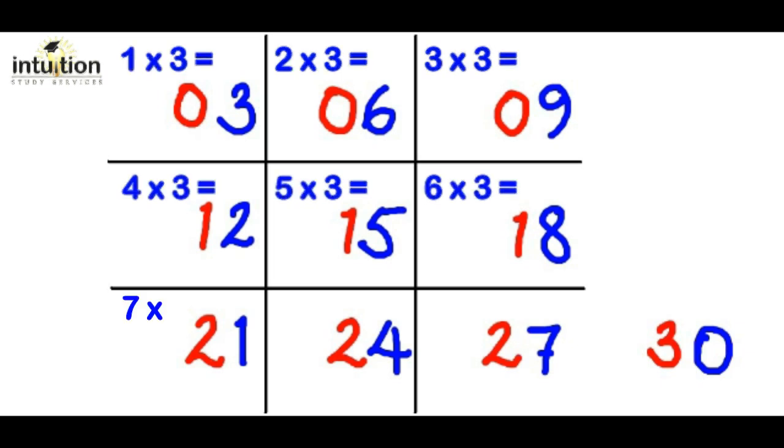Here we've got 7 times 3, which is 21. Here we've got 8 times 3, which is 24. Here we've got 9 times 3, which is 27, and finally we've got 10 times 3 which is 30.